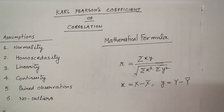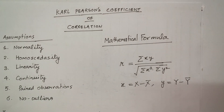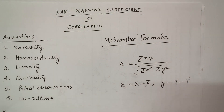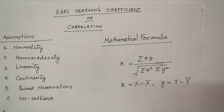For example, you can think of the amount of rainfall and the production of wheat depending on it. You can think of another example like more CO2 emission causing higher levels of pollution. So the variables must be logically correlated first.